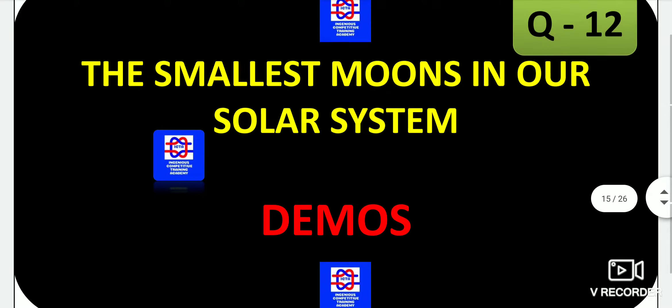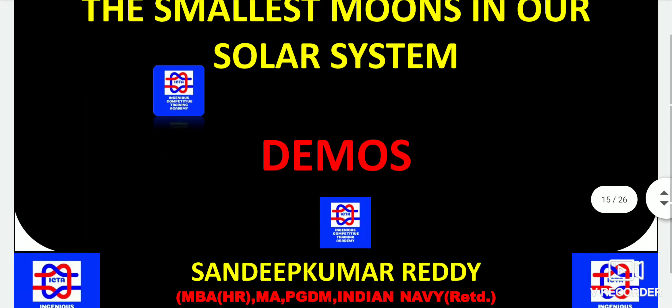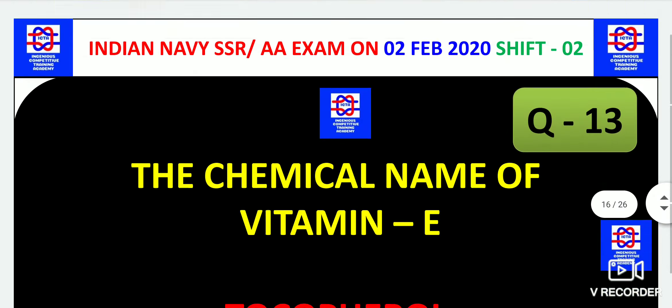Next, the smallest moons in our solar system — Phobos and Deimos are the moons of Mars. Phobos is the bigger one and Deimos is the smaller one. So Deimos is the smallest moon in our solar system.